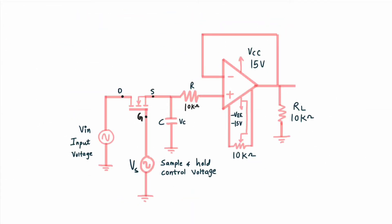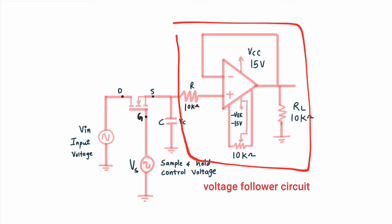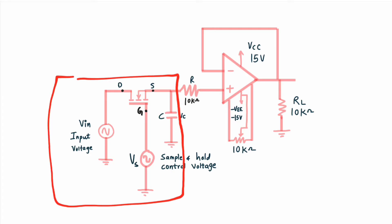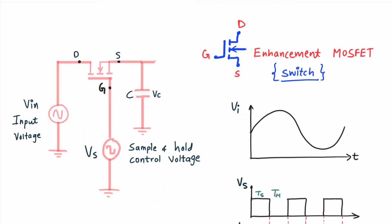This is the circuit. If you look at this part, it is just a voltage follower circuit. This potentiometer is connected to minimize the offset voltage — that is out of scope, but just know it minimizes offset voltage. To the non-inverting terminal we are going to connect the main sample and hold circuit. The voltage follower simply follows the input — whatever you give as input will appear at the output.